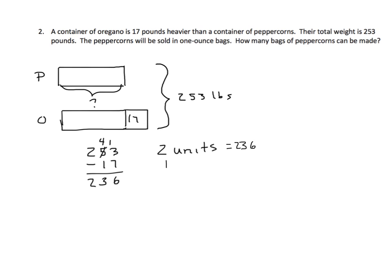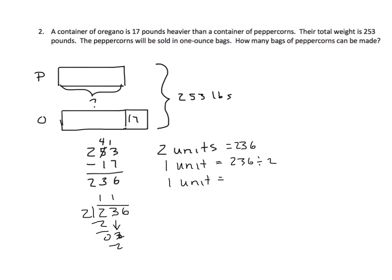Therefore, one unit equals 236 divided by 2. We can divide 236 by 2: we get a 1 in the tens place, two left over, and that is an 8. So we know that each one of these blank units over here is 118. So we have 118 for the number of pounds in the peppercorns.